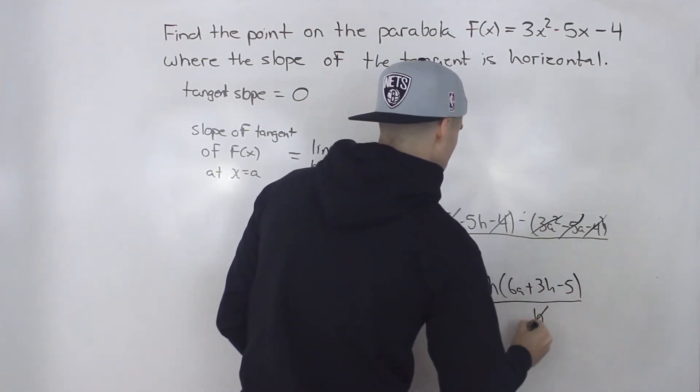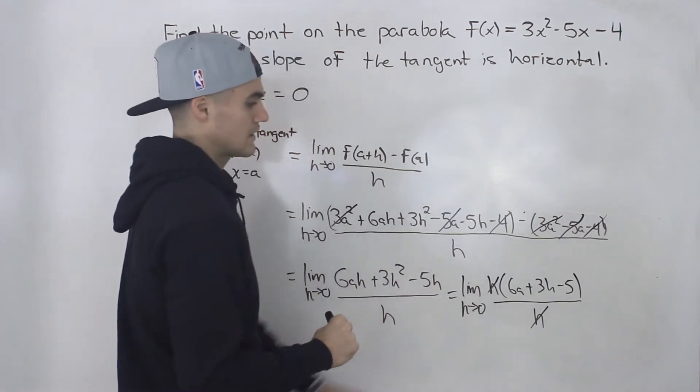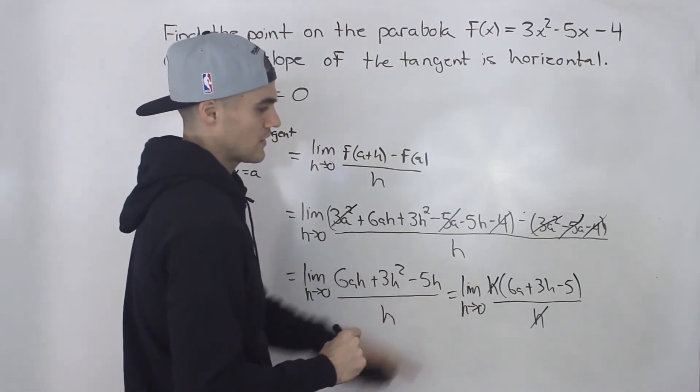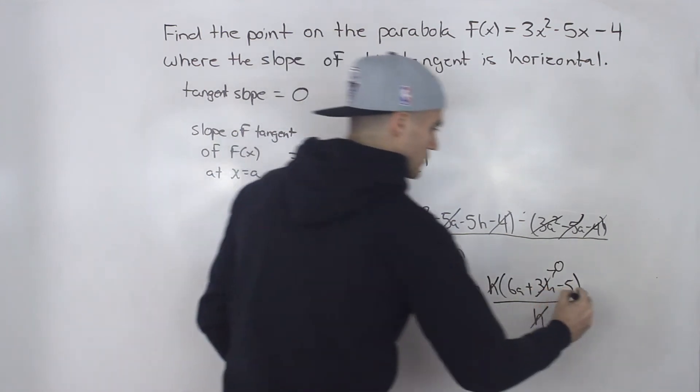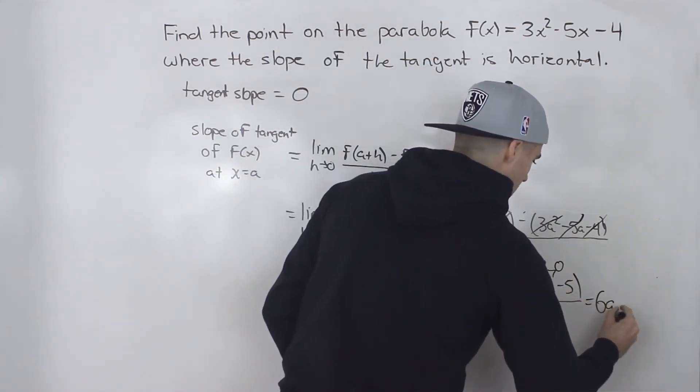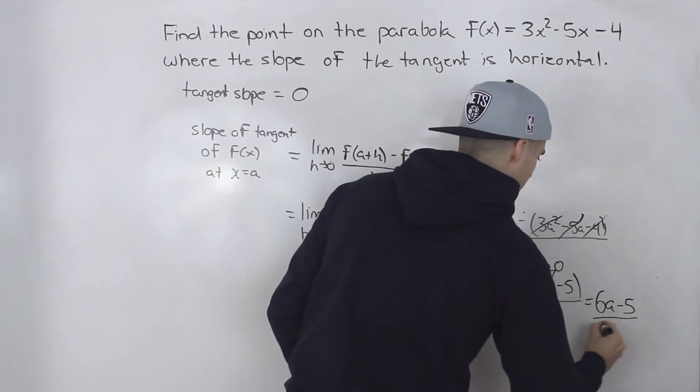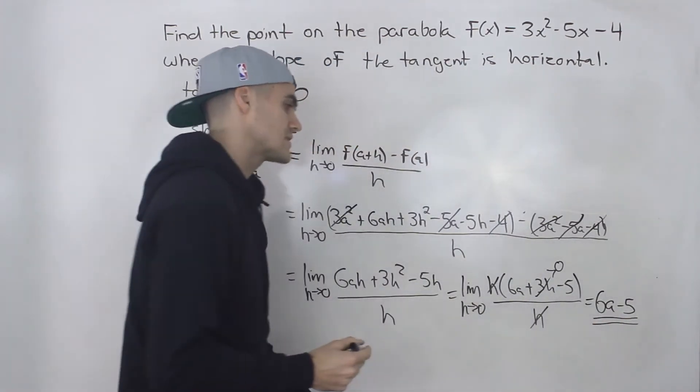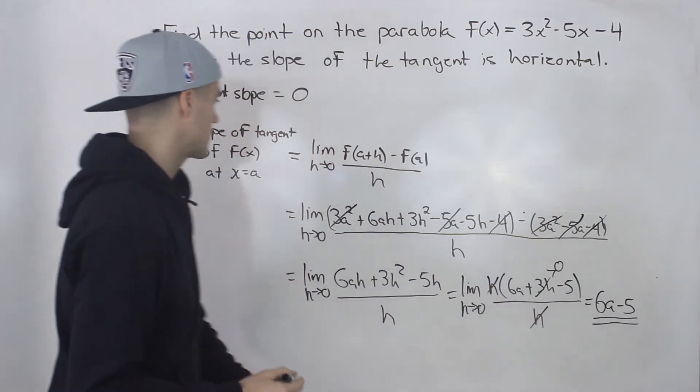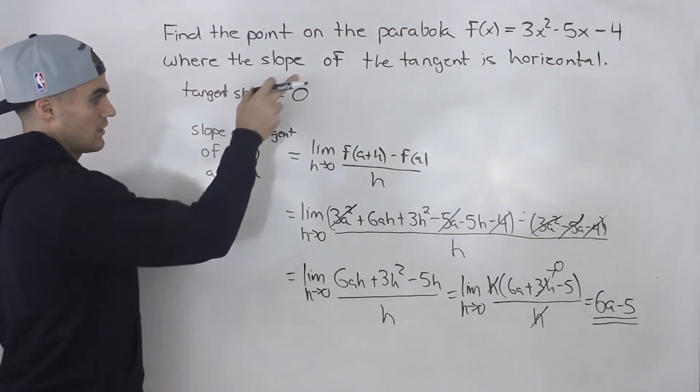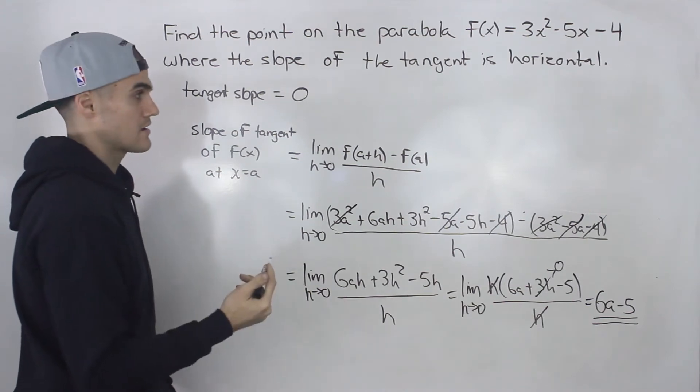So if we factor out an h in the numerator, we'll have 6a + 3h - 5, all over h, and now the h's cancel out. Now we could plug in an h value of 0, so that means this 3h would go to 0. So we would just be left with 6a - 5.